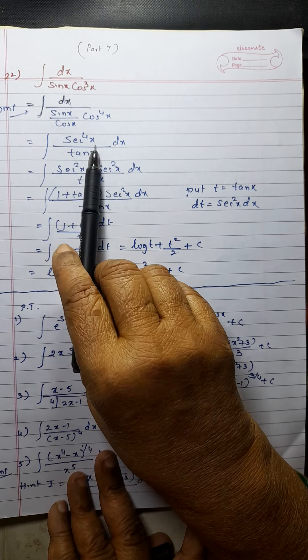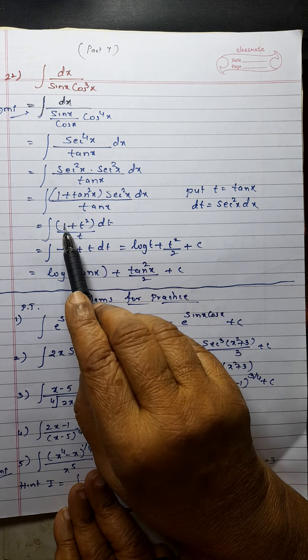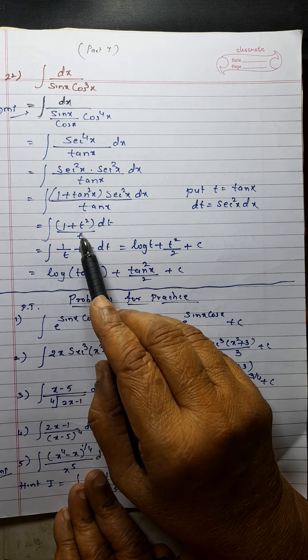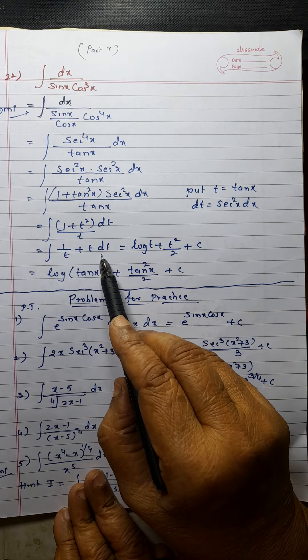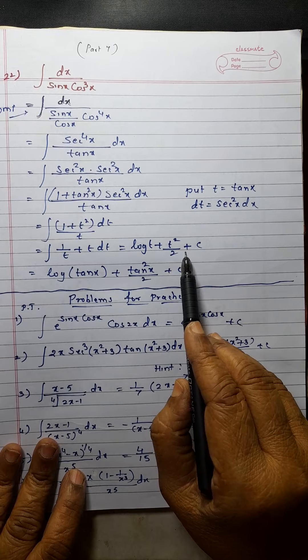Now I will put t equal to tan x. So dt will be sec square x dx. This will become 1 plus t square upon t dt. Separating the terms: 1 upon t plus t, then dt. Integration of 1 upon t is log t.